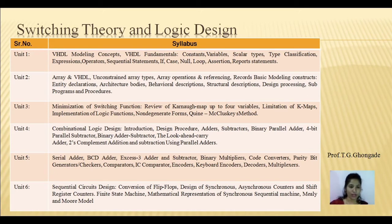Unit number 5 covers serial adder, BCD adder, XS3 adder, subtractor, multipliers, encoder, decoders, and multiplexer. Unit number 5 is all about the implementation of combinational circuits.